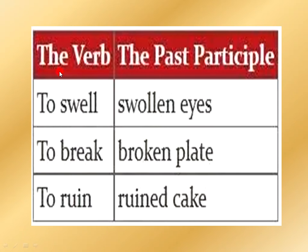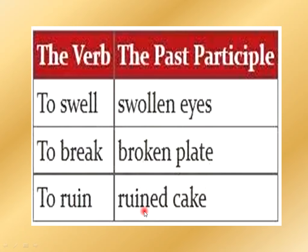Some more examples. You can see the verbs: 'to swell,' 'to break,' 'to ruin.' These become 'swollen eyes,' 'broken plate,' 'ruined cake.' So here, 'swollen,' 'broken,' and 'ruined' are the past participles of these verbs.